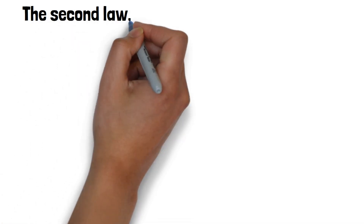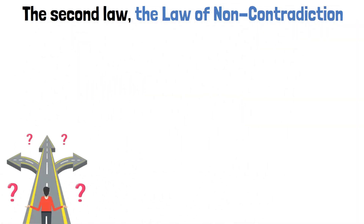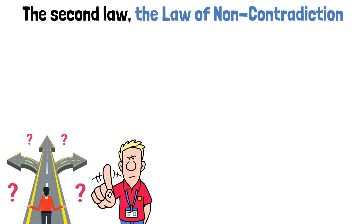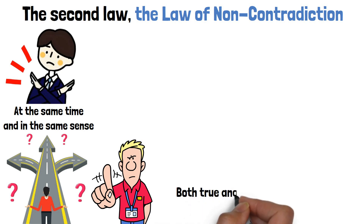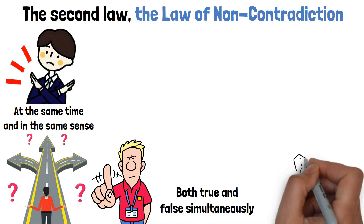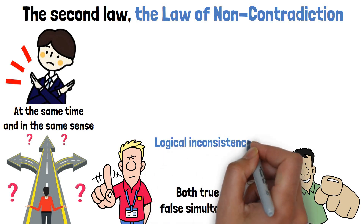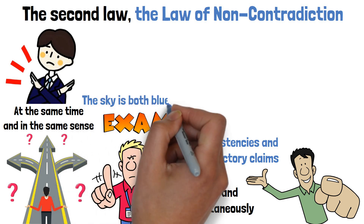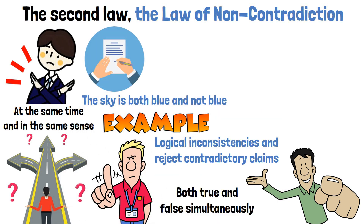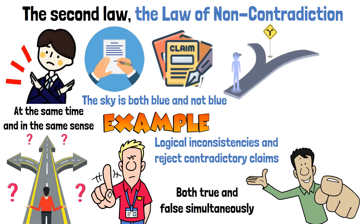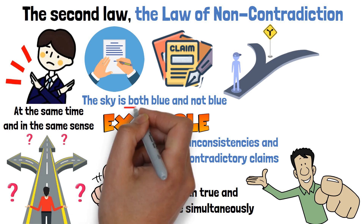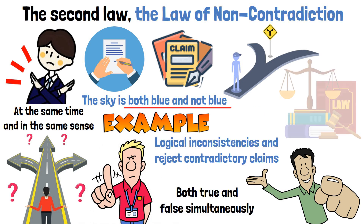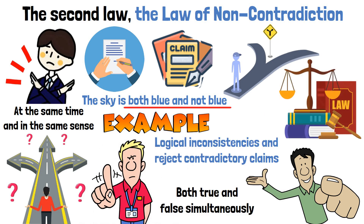The second law, the law of non-contradiction, asserts that contradictory statements cannot both be true at the same time and in the same sense. It's impossible for something to be both true and false simultaneously. This law helps us identify logical inconsistencies and reject contradictory claims. For example, the statement 'the sky is both blue and not blue' is logically contradictory because it claims the sky simultaneously has two contradictory properties — being blue and not being blue — which violates the law of non-contradiction.